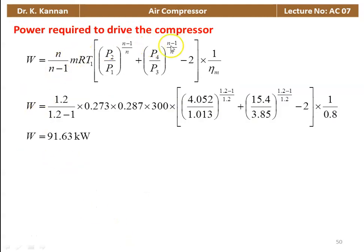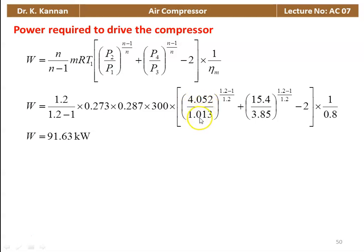Power required to drive the compressor: W = [n/(n−1)] × MR × T1 × [(P2/P1)^((n−1)/n) + (P4/P3)^((n−1)/n) − 2] × (1/η_mech). Substituting: [1.2/0.2] × 0.273 × 0.287 × 300 × [(4.052/1.013)^(0.2/1.2) + (15.4/3.85)^(0.2/1.2) − 2] × (1/0.8) = 91.63 kilowatts.